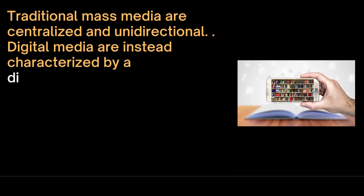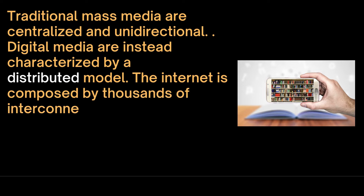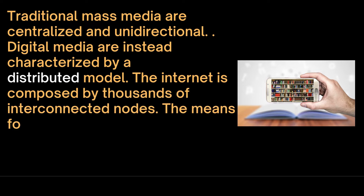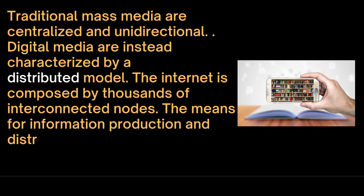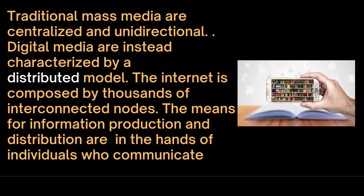Traditional mass media are centralized and unidirectional. Digital media are instead characterized by a distributed model. The internet, for example, is composed of thousands of interconnected nodes. The means for information production and distribution are in the hands of individuals who communicate horizontally.